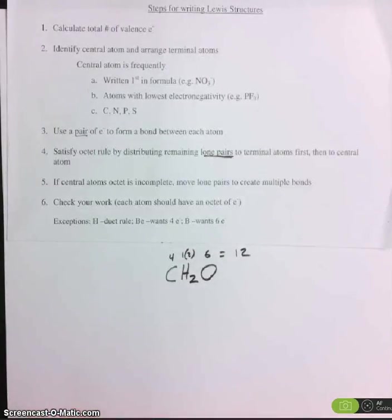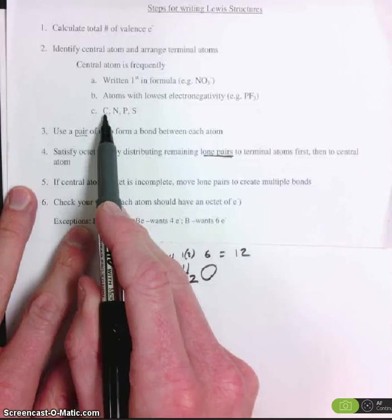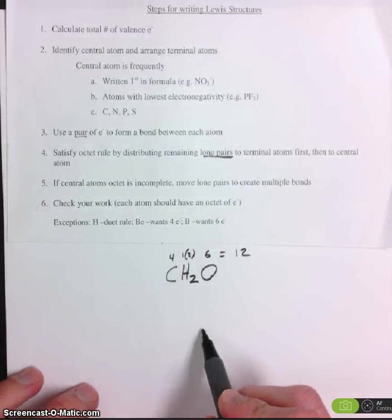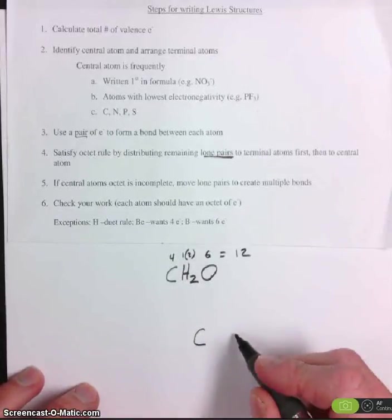Step number two, identify central atom. Carbon is always a central atom, so let's use carbon in the middle. And then let's arrange the other atoms as terminal atoms.